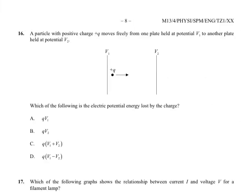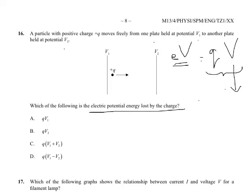Question 16. A particle with positive charge plus Q moves freely from one plate held at potential V1 to one held at V2. So which of the following is the electric potential energy lost by the charge? We've always talked about the energy due to a charge as EV when we're considering an electron, which is equal to QV if it's a positive charge. So this is the amount of energy in a moving charge. Now what does V correspond to? The potential difference. So if we have a look on here, the difference in potential would be V1 minus V2, the difference. So therefore the total energy is Q times the difference in potential, which is D.